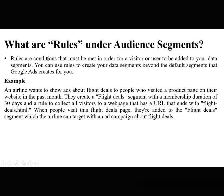What are rules under audience segments? Rules are conditions that must be met in order for a visitor or user to be added to your data segment. You can use rules to create data segments beyond the default segments Google Ads creates for you. For example, an airline wants to show ads about flight deals to people who visited a product page on their website in the past month. They create a flight deal segment with a membership duration of 30 days and a rule to collect all visitors to a webpage with a URL ending in 'flight-deals.html'. When people visit this page, they are added to the flight deals segment, which the airline can target with an ad campaign about flight deals.